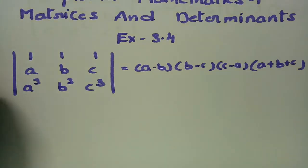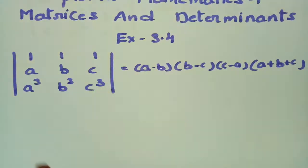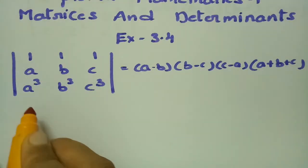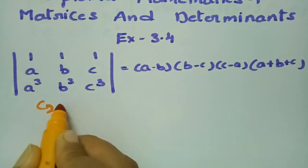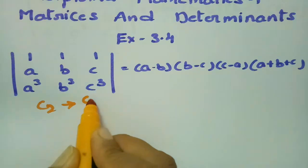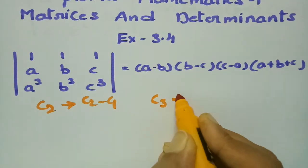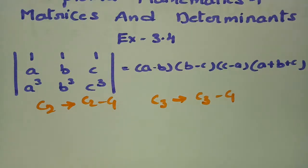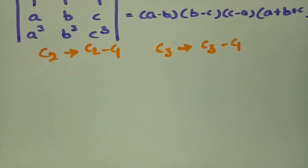If you observe properly, there are ones in the first row. To make the determinant easier, I need to make them 0. So C2 is set as column 2 minus column 1, and column 3 is set as column 3 minus column 1.